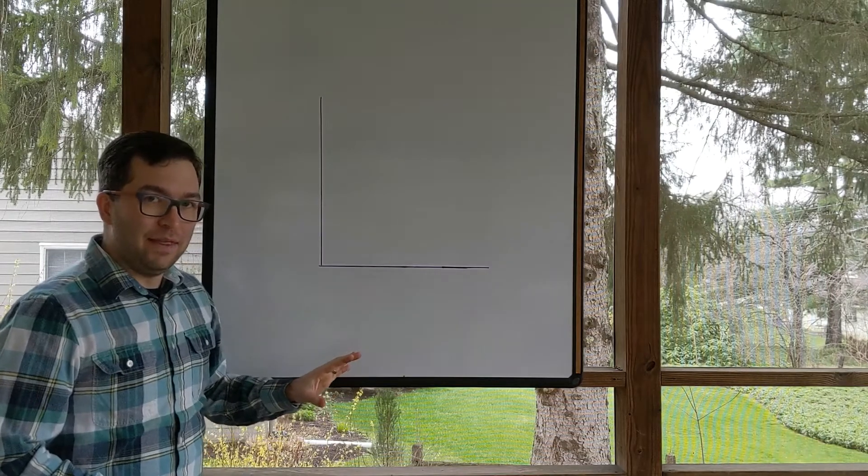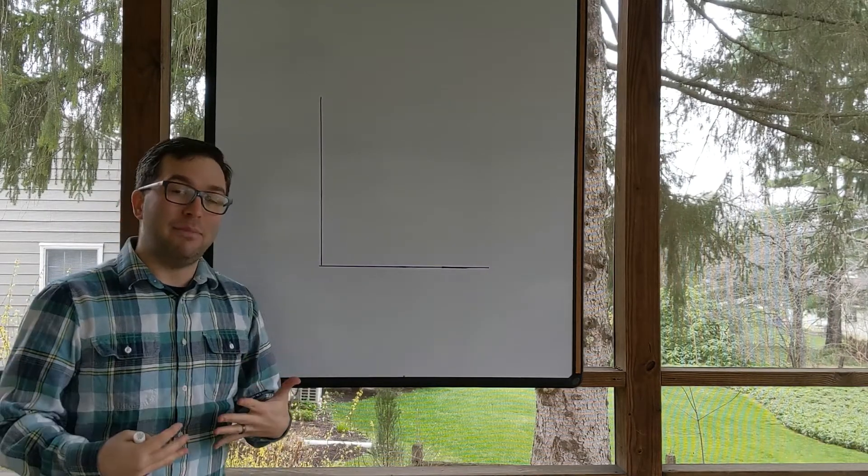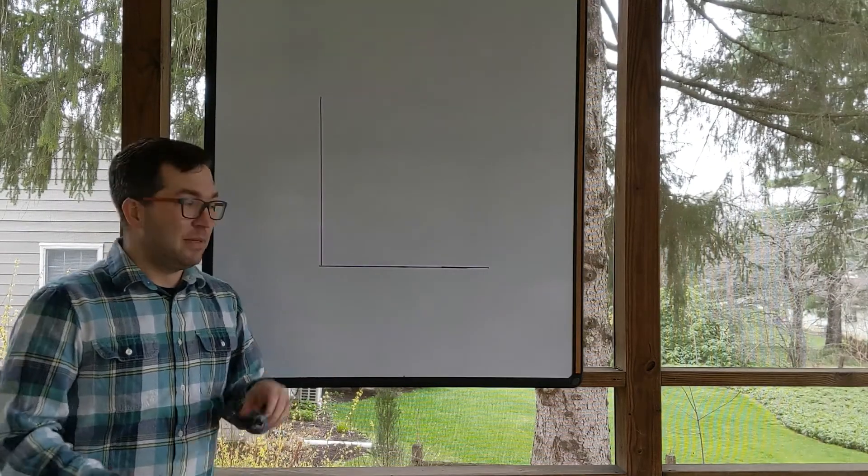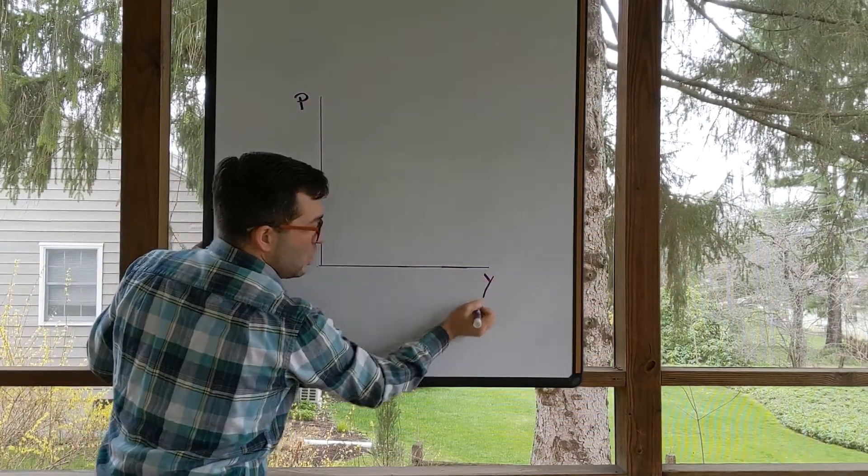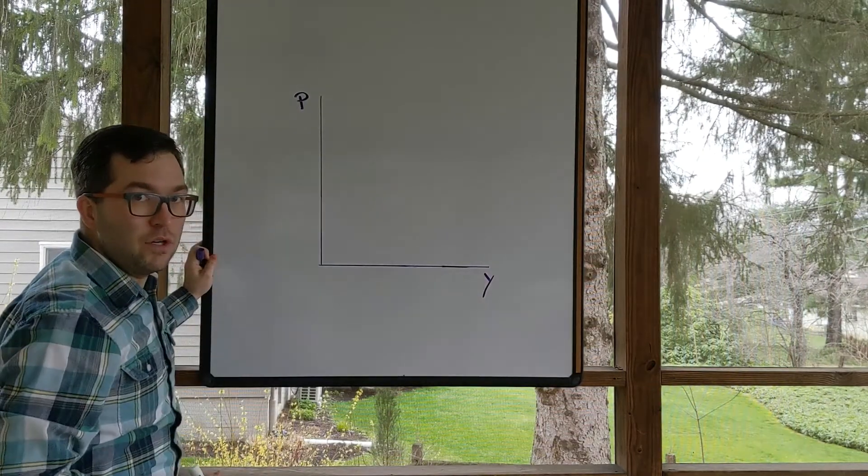So if you have a blank graph like this, when we're talking about the aggregate demand aggregate supply model, specifically here aggregate demand, we always want to graph price level versus real GDP. That's your first step.